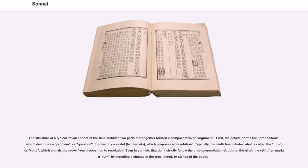The structure of a typical Italian sonnet of the time included two parts that together formed a compact form of argument. First, the octave forms the proposition, which describes a problem or question, followed by a sestet (two tercets), which proposes a resolution. Typically, the ninth line initiates what is called the turn, or volta, which signals the move from proposition to resolution.